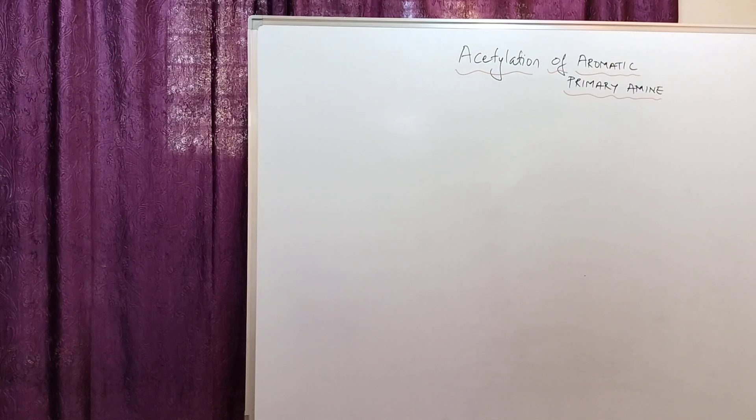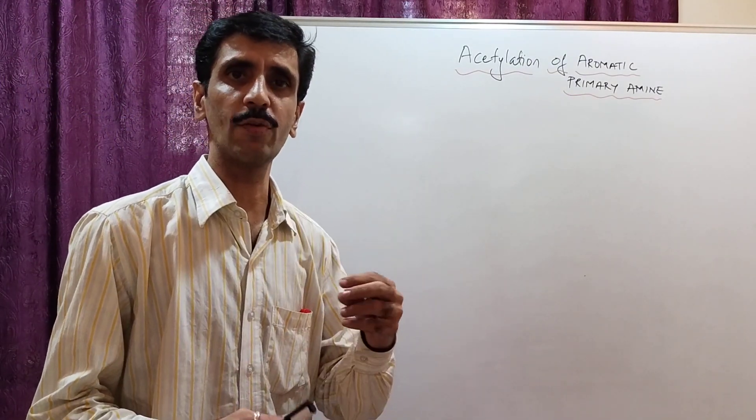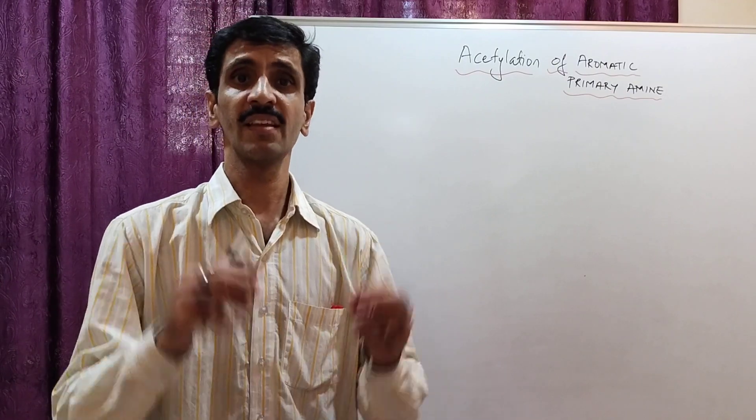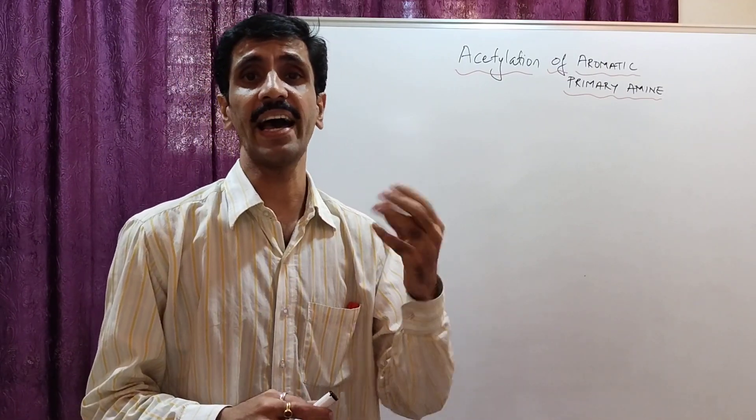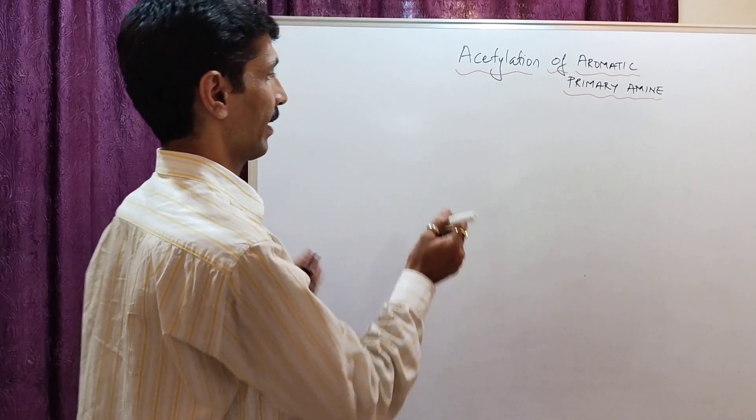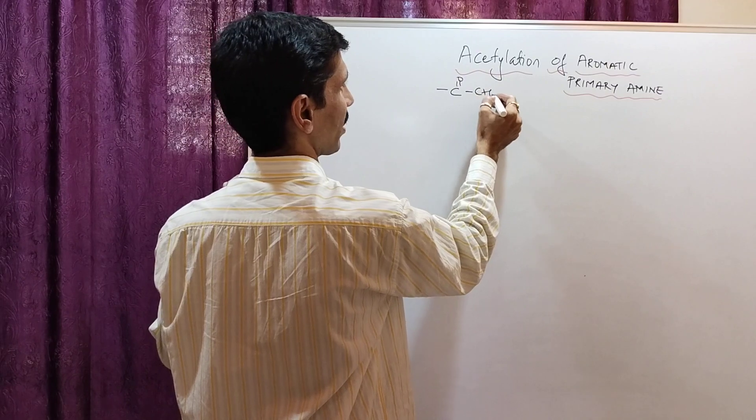As you can see over here, we are going to discuss about acetylation of aromatic primary amine. First of all, we are trying to understand what is acetylation. In simple words, acetylation is addition of an acetyl group. And what is an acetyl group? C double bond O, CH3.